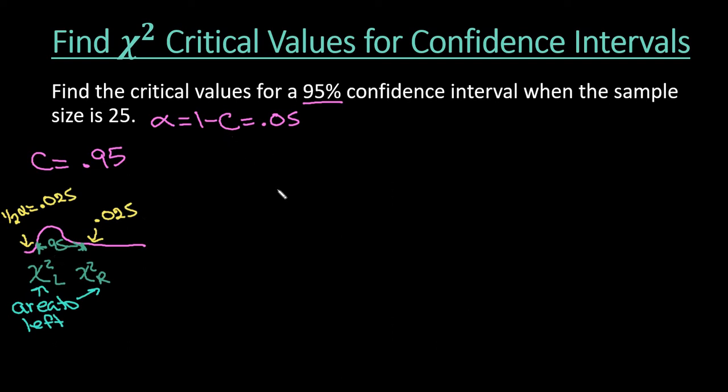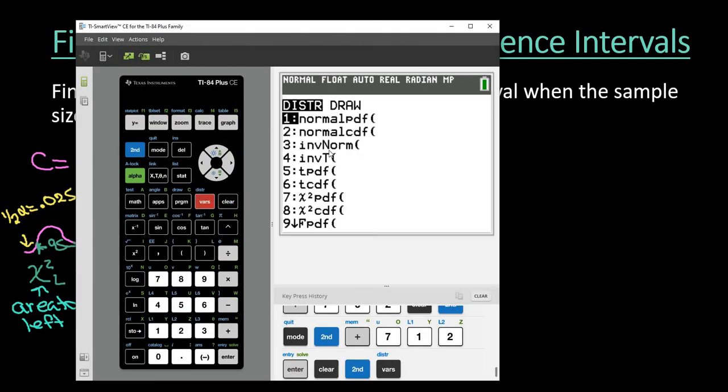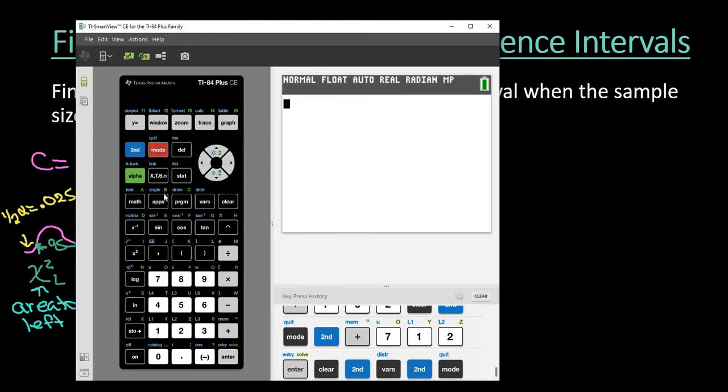So unfortunately if I go into my distributions, if you remember from finding critical values in the normal distribution and the t distribution, there was an inverse norm and an inverse t to help us find those critical values. Well if I look at chi square, there is not an inverse chi squared already pre-programmed into our calculator, so we can't just go into our distributions and hit a nice fancy button.